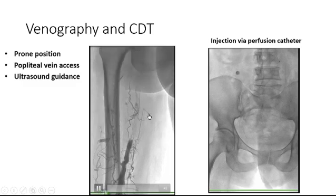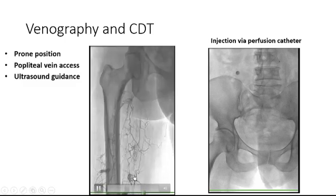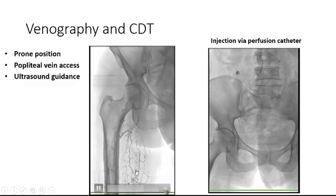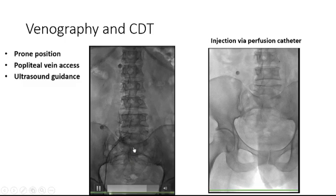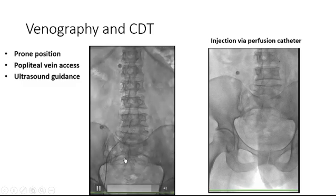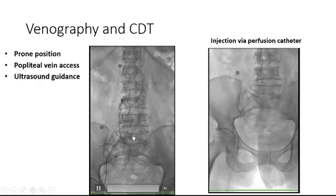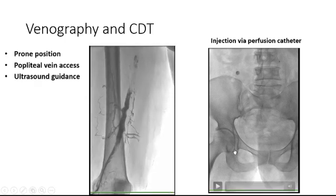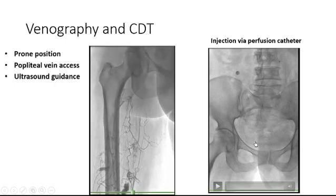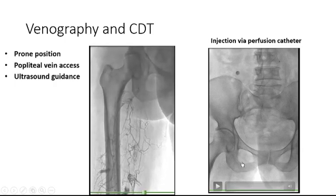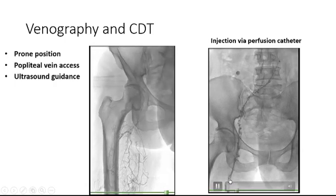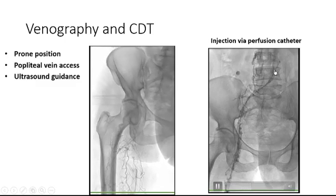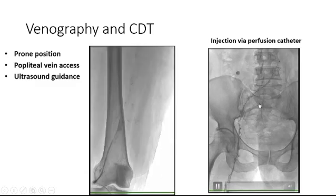You can see large thrombus in the left leg, and catheter injection in the iliofemoral veins shows occlusion of common iliofemoral veins and some collateral perfusion. The perfusion catheter for catheter-directed thrombolysis was placed from the superficial femoral vein to the common iliofemoral vein.